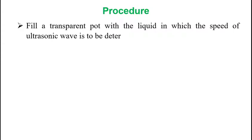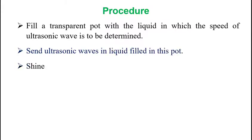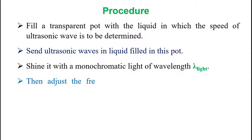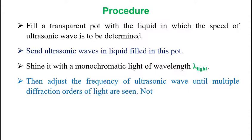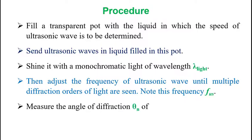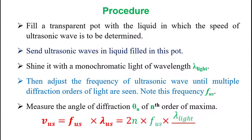So finally, what is the procedure to determine the velocity of ultrasonic wave in the liquid? Fill the transparent pot with the liquid in which the speed of ultrasonic wave is to be determined. Then send the ultrasonic waves in liquid filled in this pot. Then shine it with the monochromatic light of wavelength lambda light. Then adjust the frequency of ultrasonic wave by its generator until multiple diffraction orders of light are seen. Note this frequency f us. Now measure the angle of diffraction theta n for nth order of maxima. And finally, put all the knowns in the equation to find the desired wavelength of ultrasonic wave.